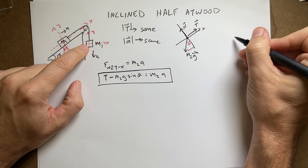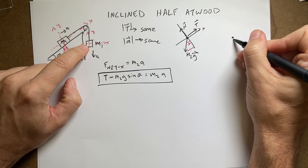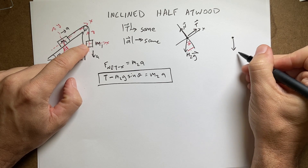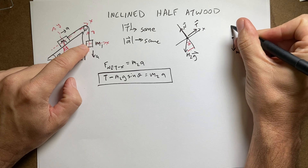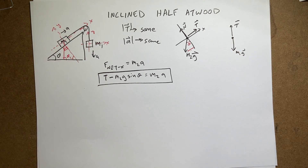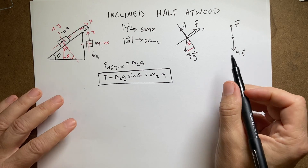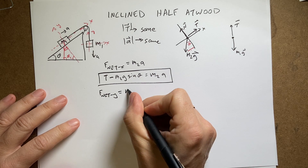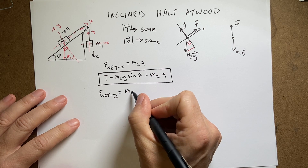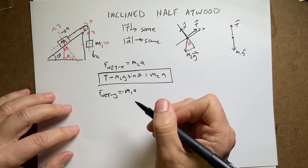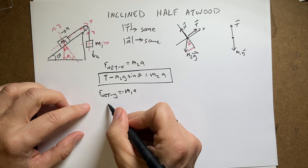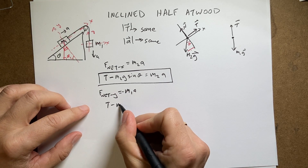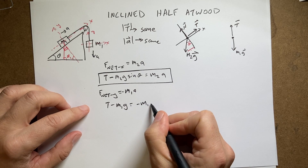Now for mass 1 hanging, I have M₁G downward and tension T upward. I don't know which is greater so I'll assume it's accelerating downward. Writing the net force in the y direction: T − M₁G = −M₁A.